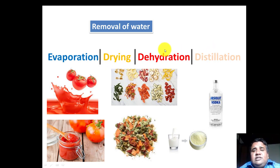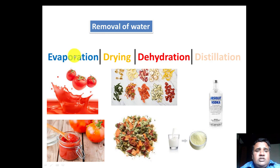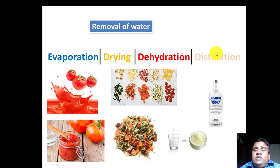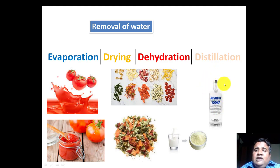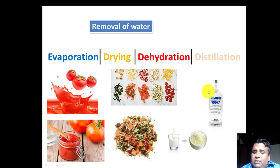There is another term: distillation. In distillation we heat the material and there is generation of vapor — the same as in evaporation. But evaporation is different from distillation because in distillation we carry out further fractionation of the vapors, and on the basis of that vapor fractionation we collect the distilled material, like in preparation of whiskey, brandy, or vodka — we collect the ethanol by the process of distillation.